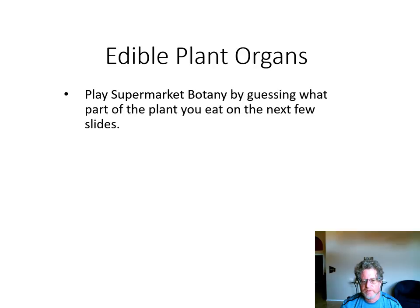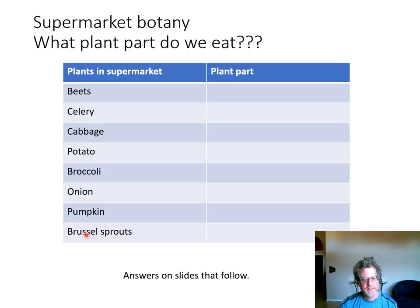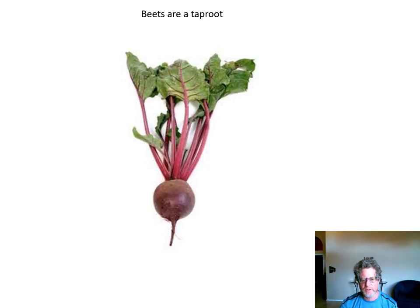For fun, here's a game called supermarket botany. There are pictures of various plants and you try to decide what plant part they are. For example, this is a root — specifically a taproot. And this is your petiole, and this is your leaf. It's a taproot that people usually eat, though some people eat beet greens as well.